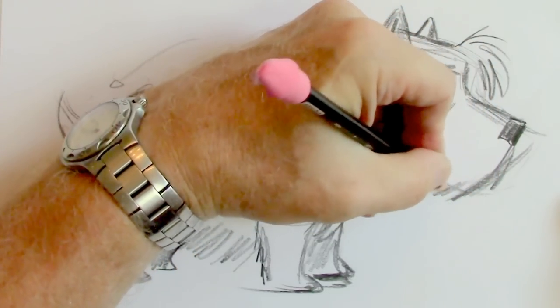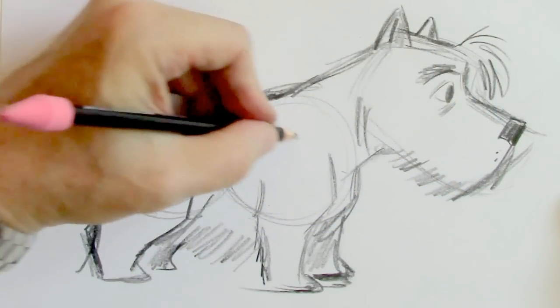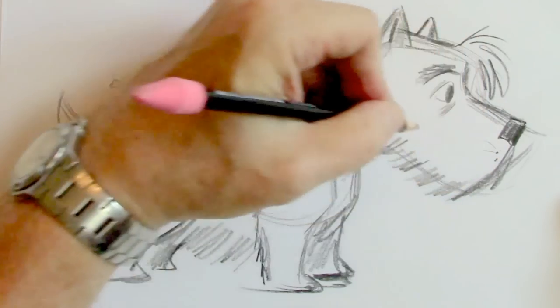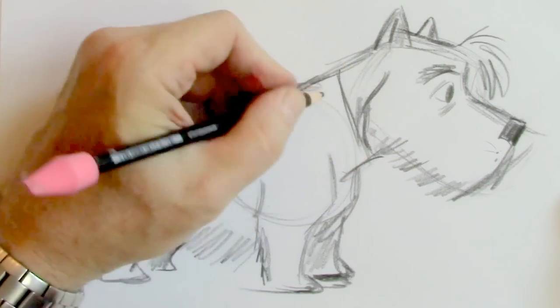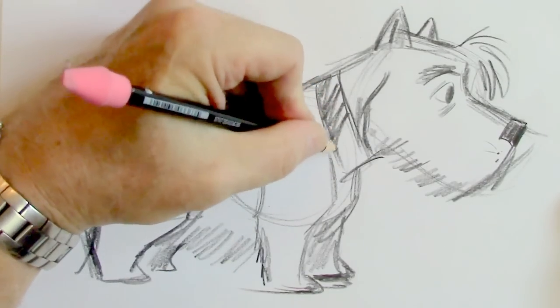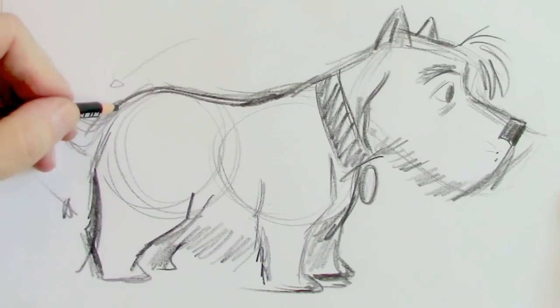And he has too much Westie fur to see his mouth, so we're just going to indicate that with a couple of whiskers like so. And we'll give him a nice thick collar. Even though he's a little guy, he is really sturdy. That's what I love about these dogs.